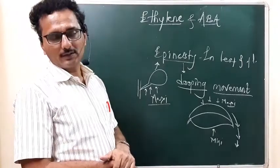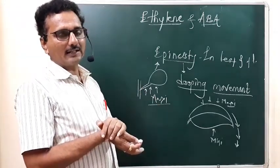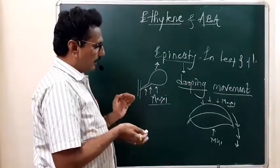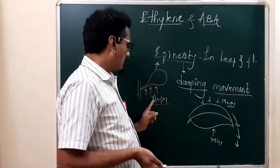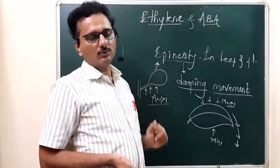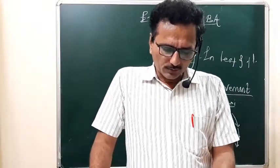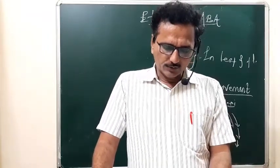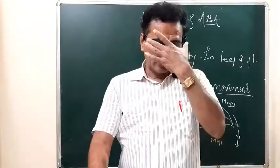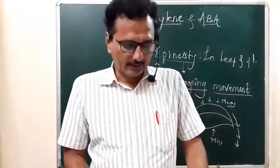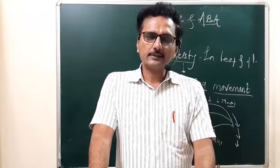So epinasty occurs when the plant part shows downward movement due to differential growth, and hyponasty is when growth is maximum on the lower side causing upward movement. For question 240 — which hormone causes epinasty — the options are GA3, indoleacetic acid, ethylene, and cytokinin. The correct answer is ethylene, the third option.